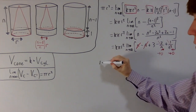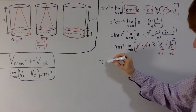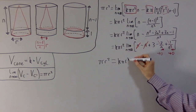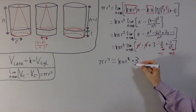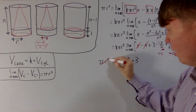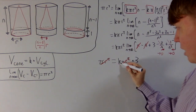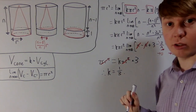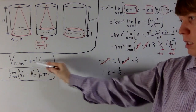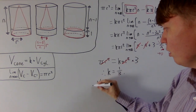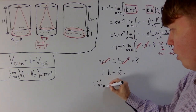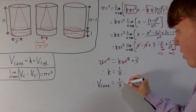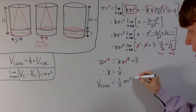So we have πr² = k·πr²·3. The πr² terms cancel, giving 1 = 3k, and therefore k = one third, which is exactly what we were trying to show. Since the volume of a cone is k times the volume of a cylinder, we can conclude that the volume of a cone equals one third times πr² times the height h.